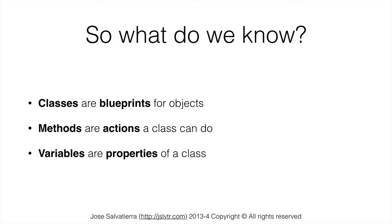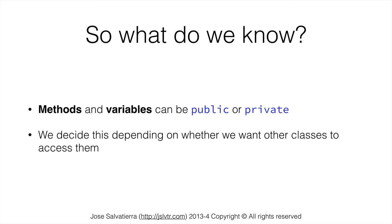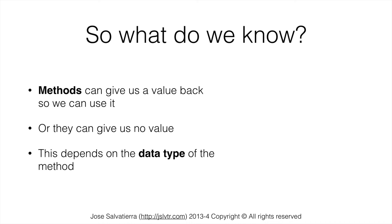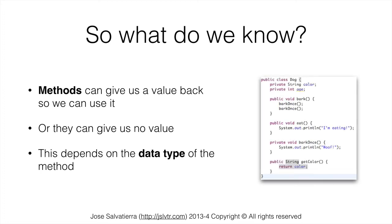So what do we know? Classes are the blueprints for objects. Methods are the actions of a class — the actions an object of that class can do — whereas variables are the properties of a class and the properties of an object of that class. Methods and variables can be public or private, and we decide depending on whether we want other classes to access them. Methods can give us a value back so we can use it, or they can give us no value at all if we make them void. This depends on the data type of the method. Void methods don't return anything and have no return statement. If we don't make them void, we have to return something — because the data type of the method is string, we have to return a string, in this case color, which is defined as a string.